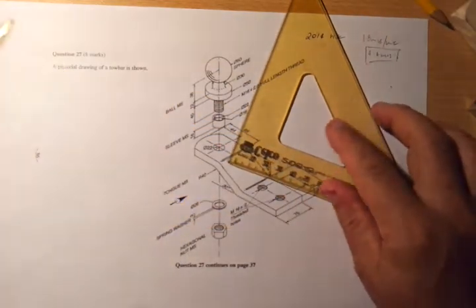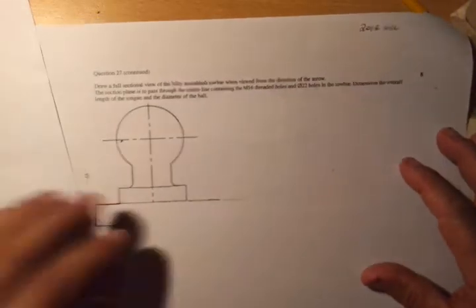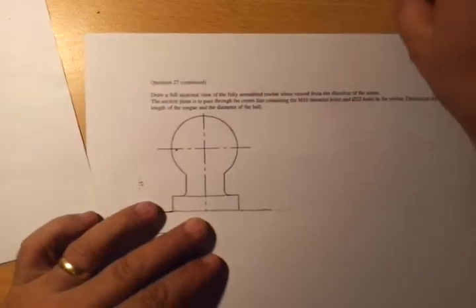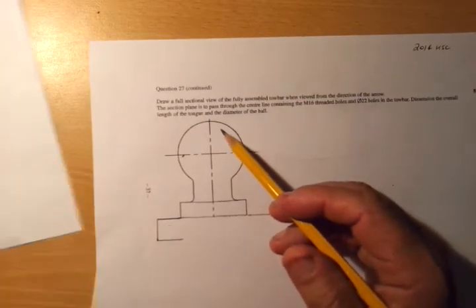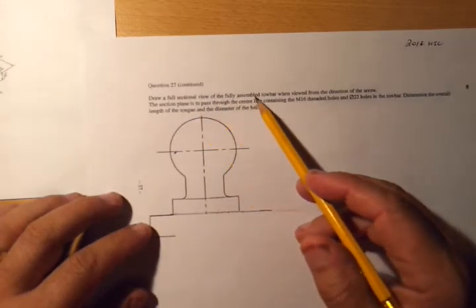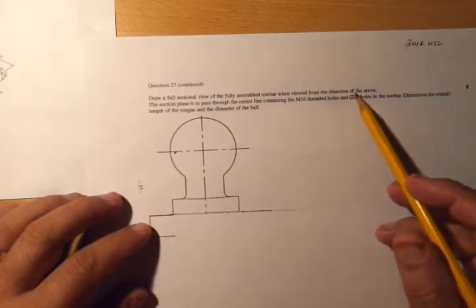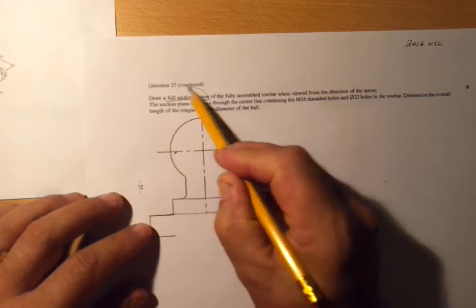Alright, having said all that, what is the question? Well, the next page, here it is. It's to draw a full sectional view of the assembled tow bar when viewed from the direction of the arrow. The first thing to note is full sectional view. So that's important.